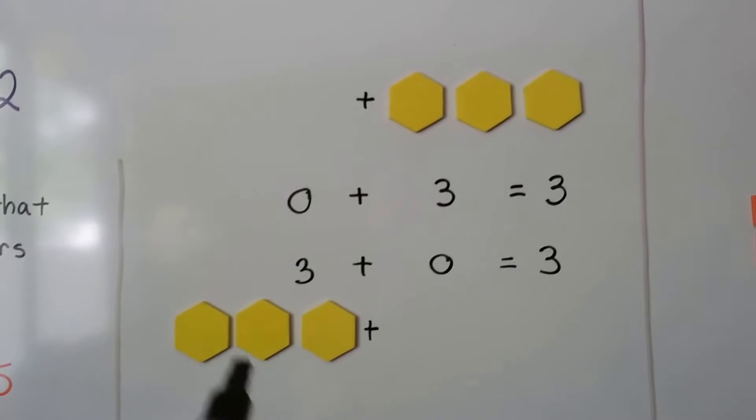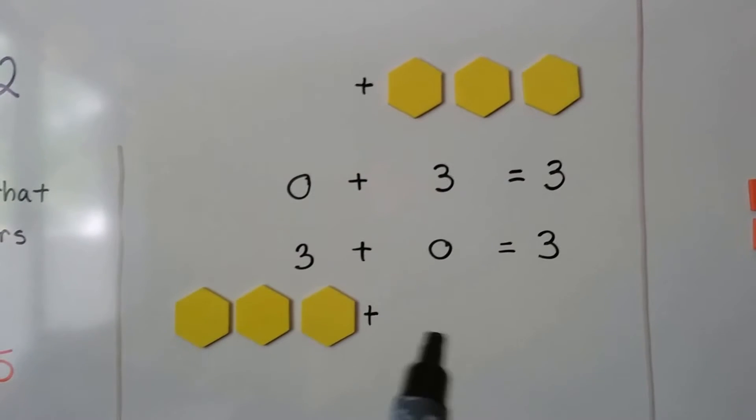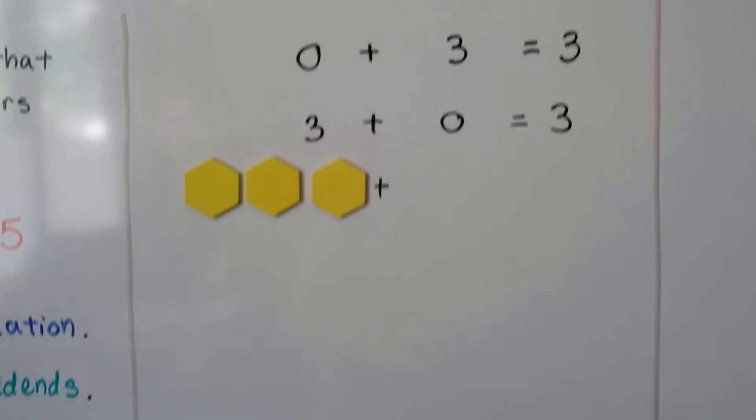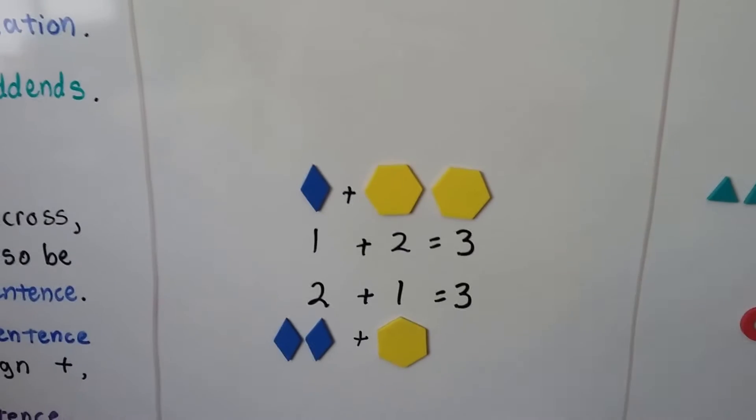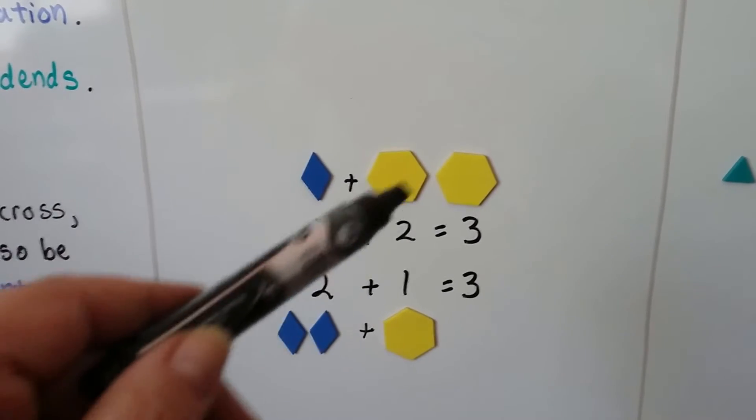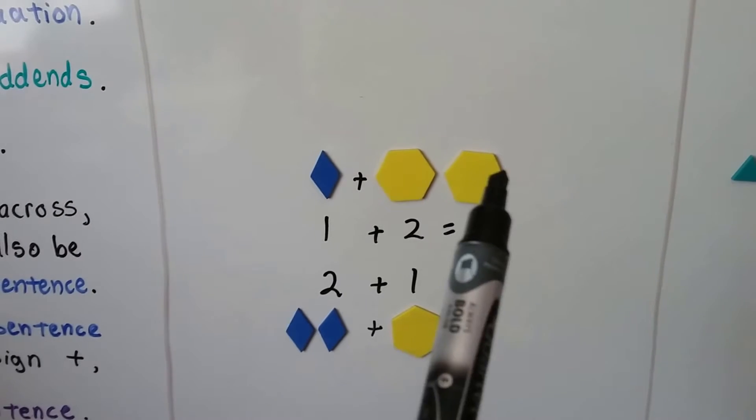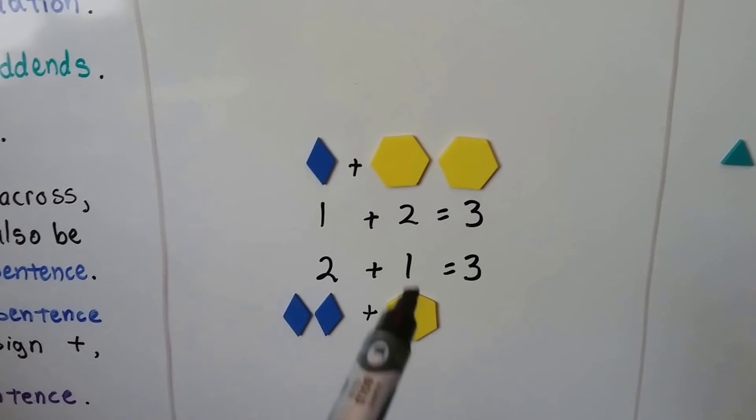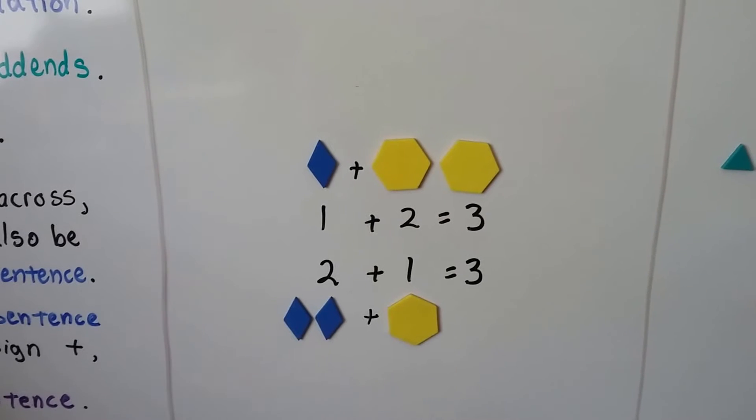Now we have the three counters on this side, but there aren't any over here. So we have three plus zero equals three. We have one blue counter on this side, two yellow counters on this side, and they total three. When we put two blue counters on this side and one yellow counter on this side, it still equals three.